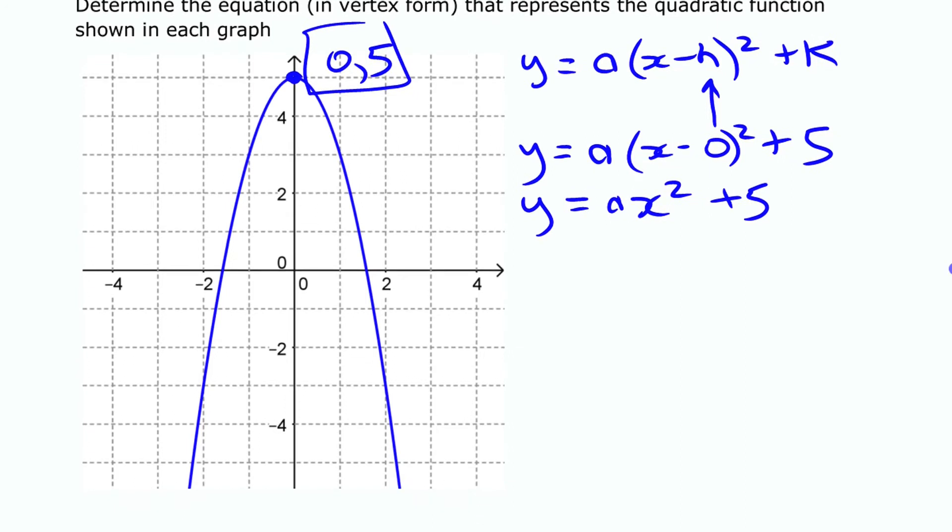To find that a value you have a couple different options here. One option is to substitute in the coordinates of a point that you know, and there's a couple that you could use here. Any of those points is going to work. I am going to choose this one because it's probably the simplest values to work with. Those coordinates are 1, 3. This is x, this is y.